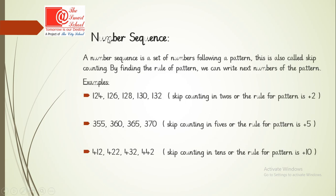Now, number sequence — a very interesting concept. A number sequence is a set of numbers following a pattern. This is also called skip counting. By finding the rule of the pattern, we can write the next numbers. For example: 124, 126, 128, 130, 132. The difference is 2 each time, so we are adding 2 to every number to get the next. This is skip counting in 2's — the rule for the pattern is plus 2.